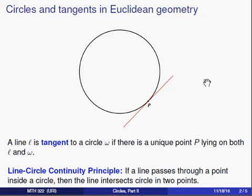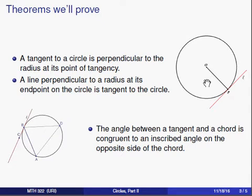Alright, now the three things we're going to be talking about in the videos that follow are these three theorems. We'll show that if you have a tangent to a circle, and you draw a line from the center to the point of tangency, then that will form a right angle. A tangent to a circle is perpendicular to the radius at its point of tangency.